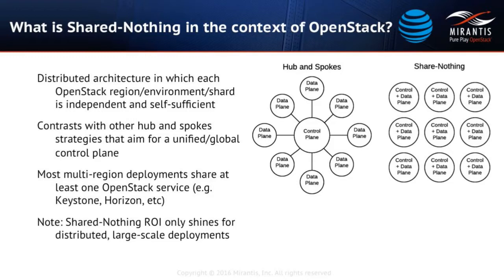This is a bit different from the hub-and-spokes topology, shown in the diagram on the left, which aims for a unified or global control plane. Most deployments aren't truly one or the other — they fall somewhere in the middle. For example, in most multi-region deployments, you have at least one shared service, typically either Keystone, Horizon, or others.